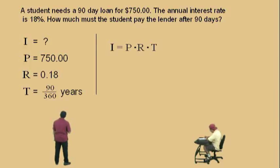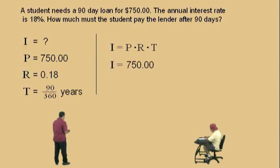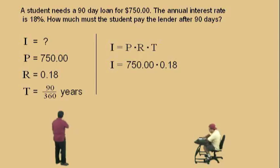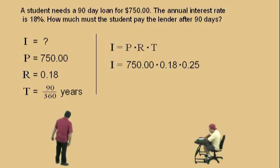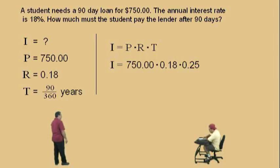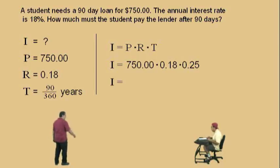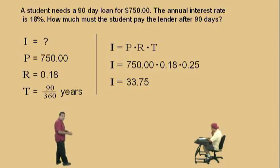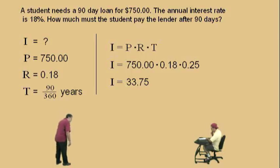Here's our formula: I equals our principal, which is 750, times our interest rate, which is 0.18, times our time in years. 90 divided by 360 equals 0.25. Our product is $33.75 — that's how much interest the student has to pay on top of the money that he already borrowed.